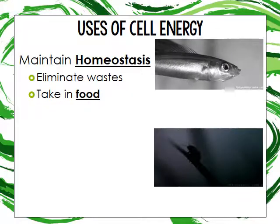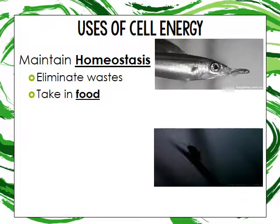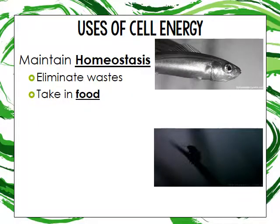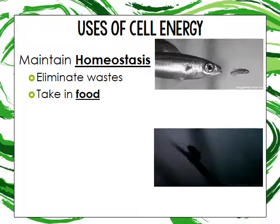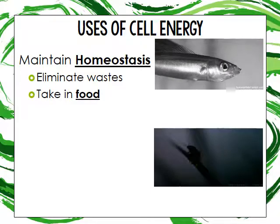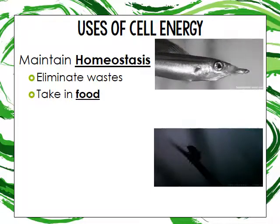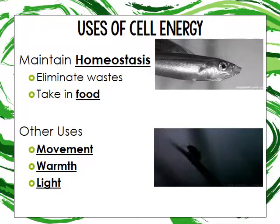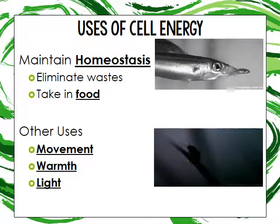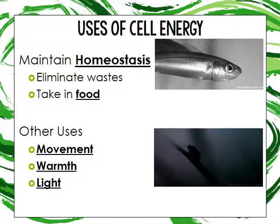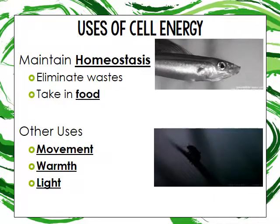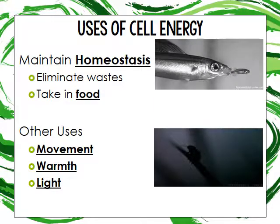Some ways that cells use energy: to maintain homeostasis, to eliminate waste, and to take in food — like you see the fish there. Other uses will be for movement, for warmth, and to create light, like you see with the bug there.